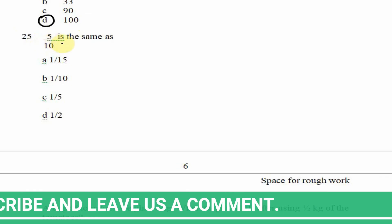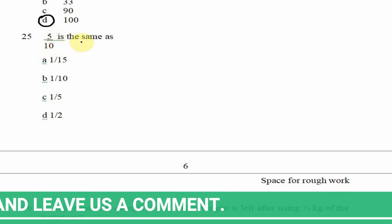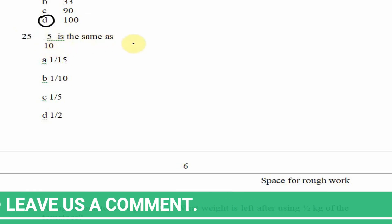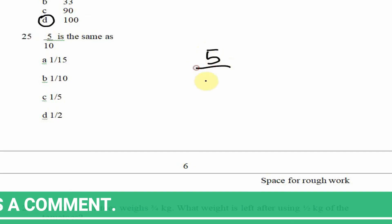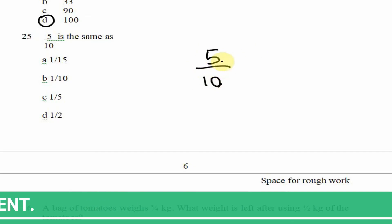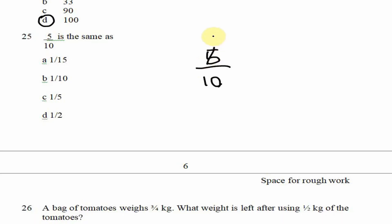Now looking at question 25: 5 divided by 10 — we can reduce this fraction. 5 into itself goes 1 time; 5 into 10 goes 2 times. So 5 divided by 10 is the same thing as one half, 1 divided by 2, which is option D.